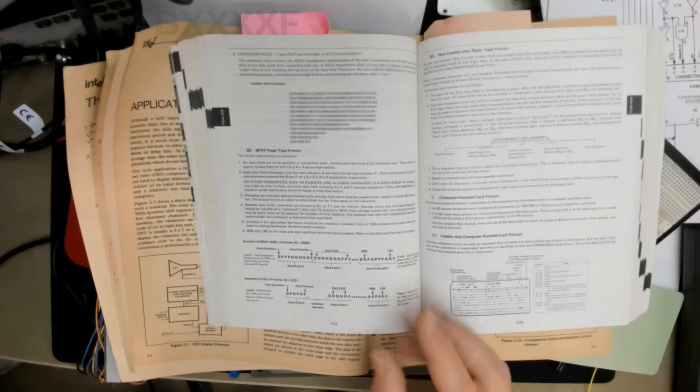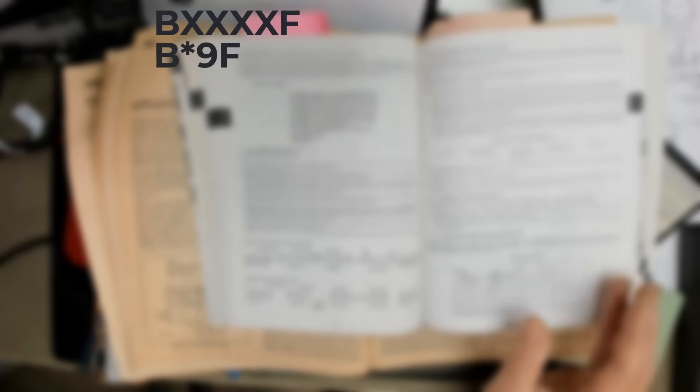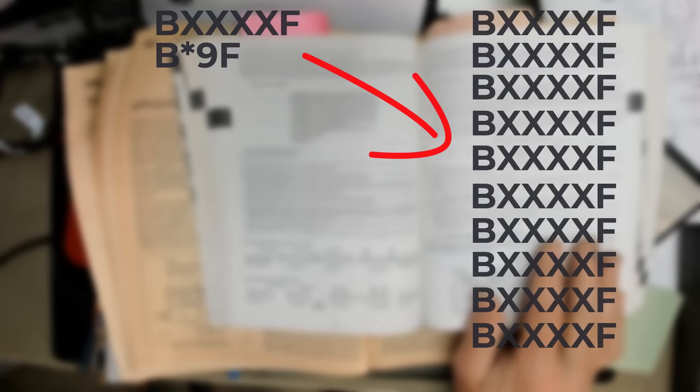So for example, if at the end of the data there were 10 bytes left over unused, the file could have a BXXX... in the first unused location and then a B asterisk 9 F and that would leave the last 10 locations unprogrammed.